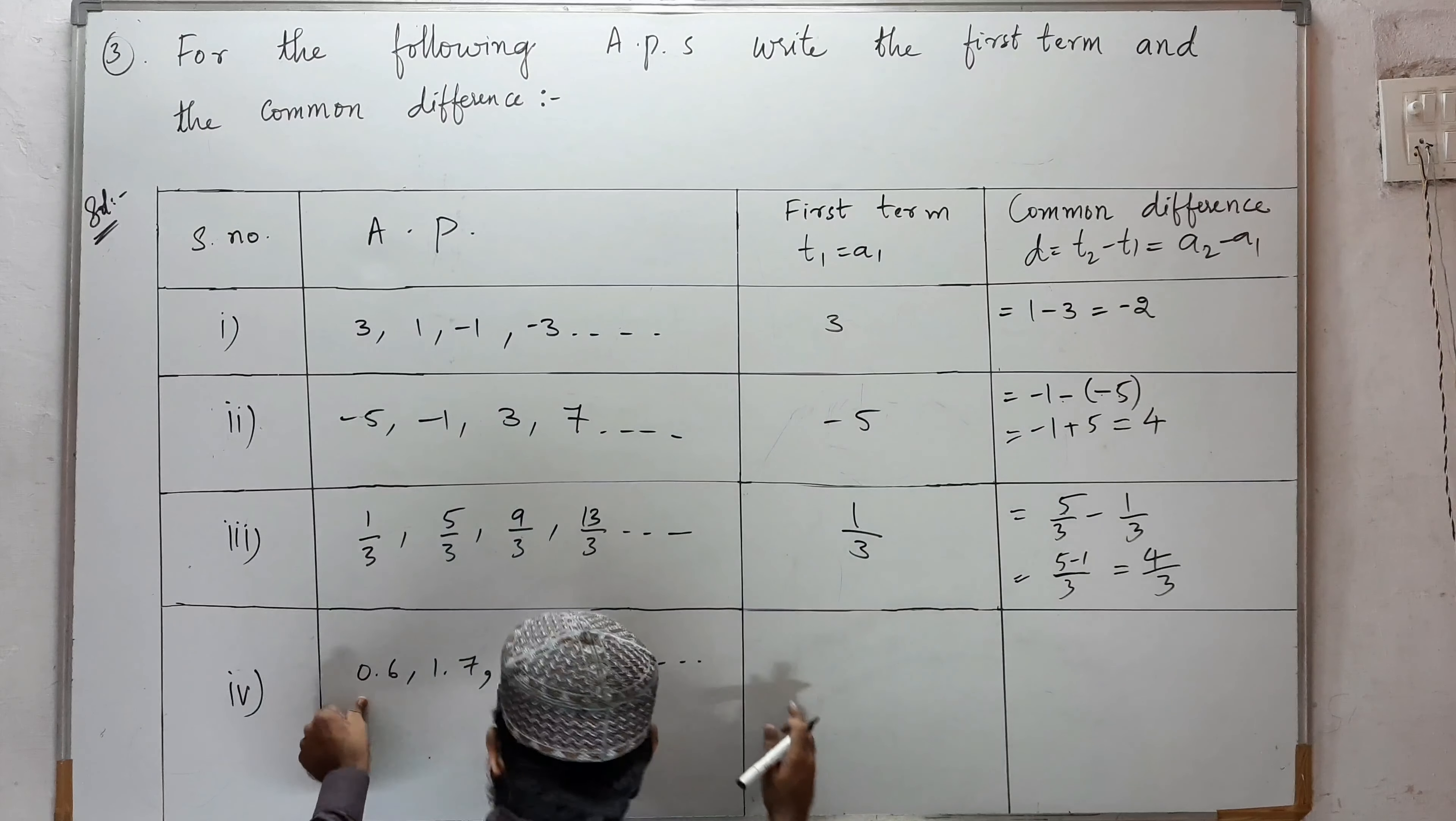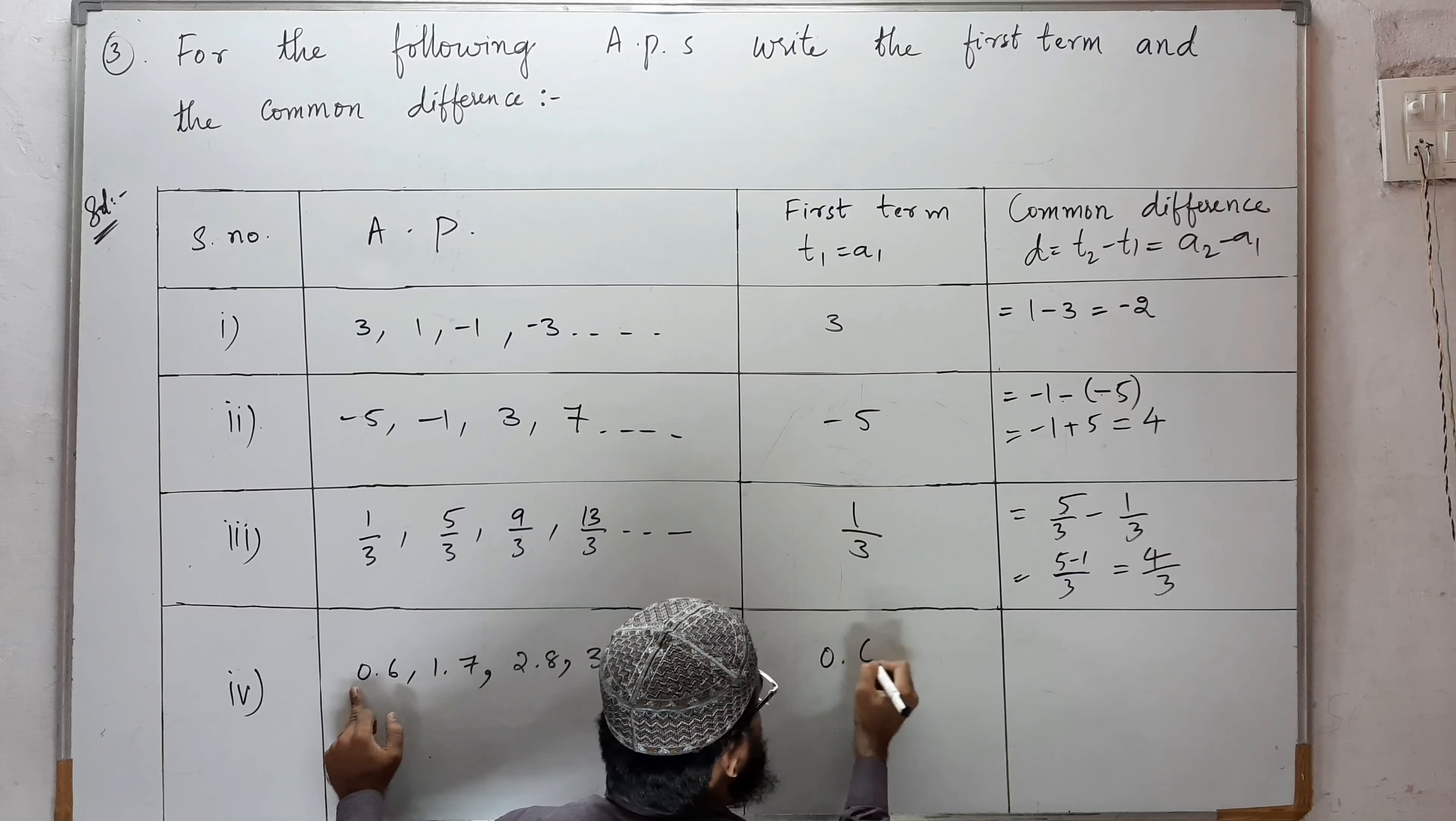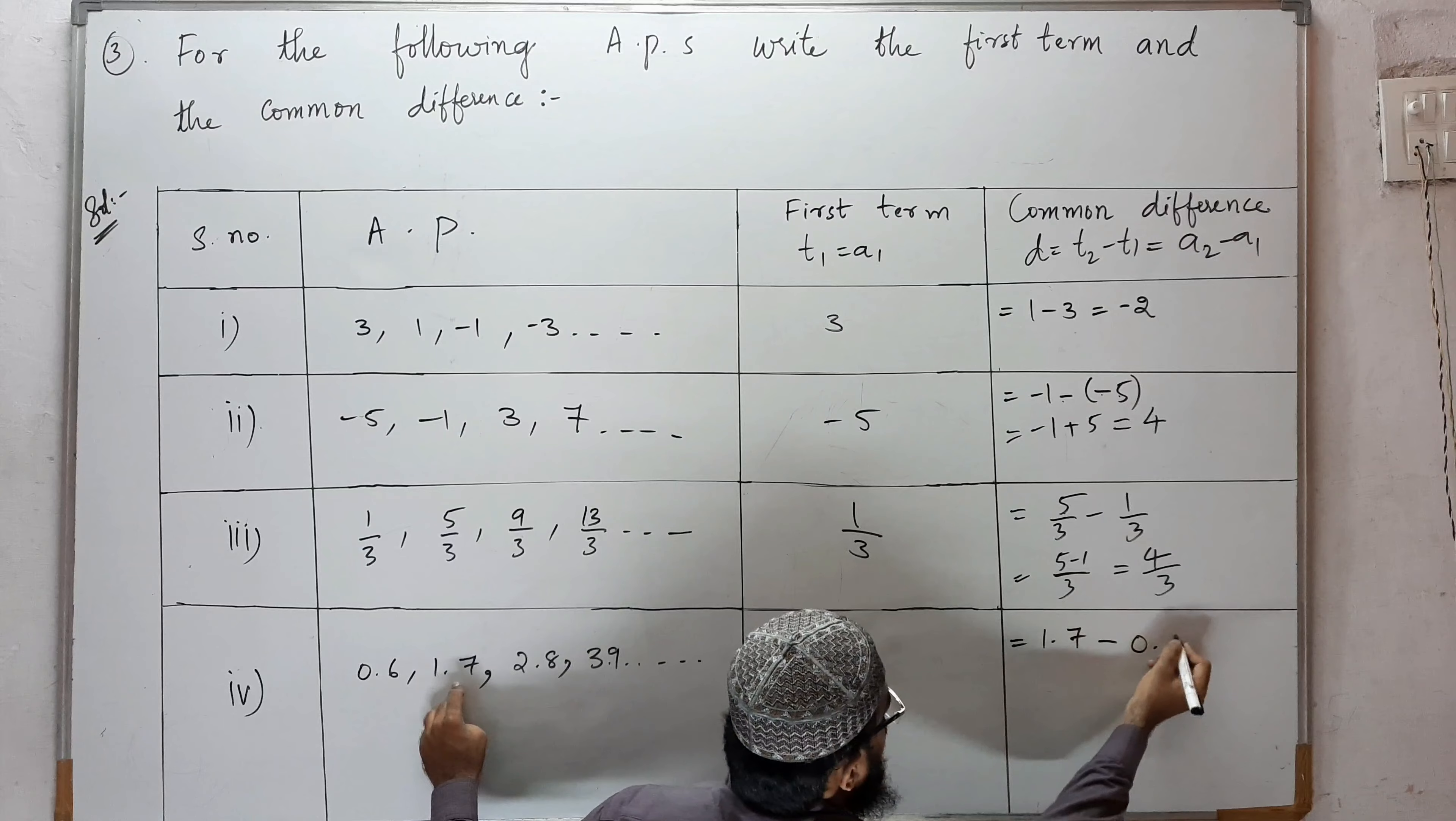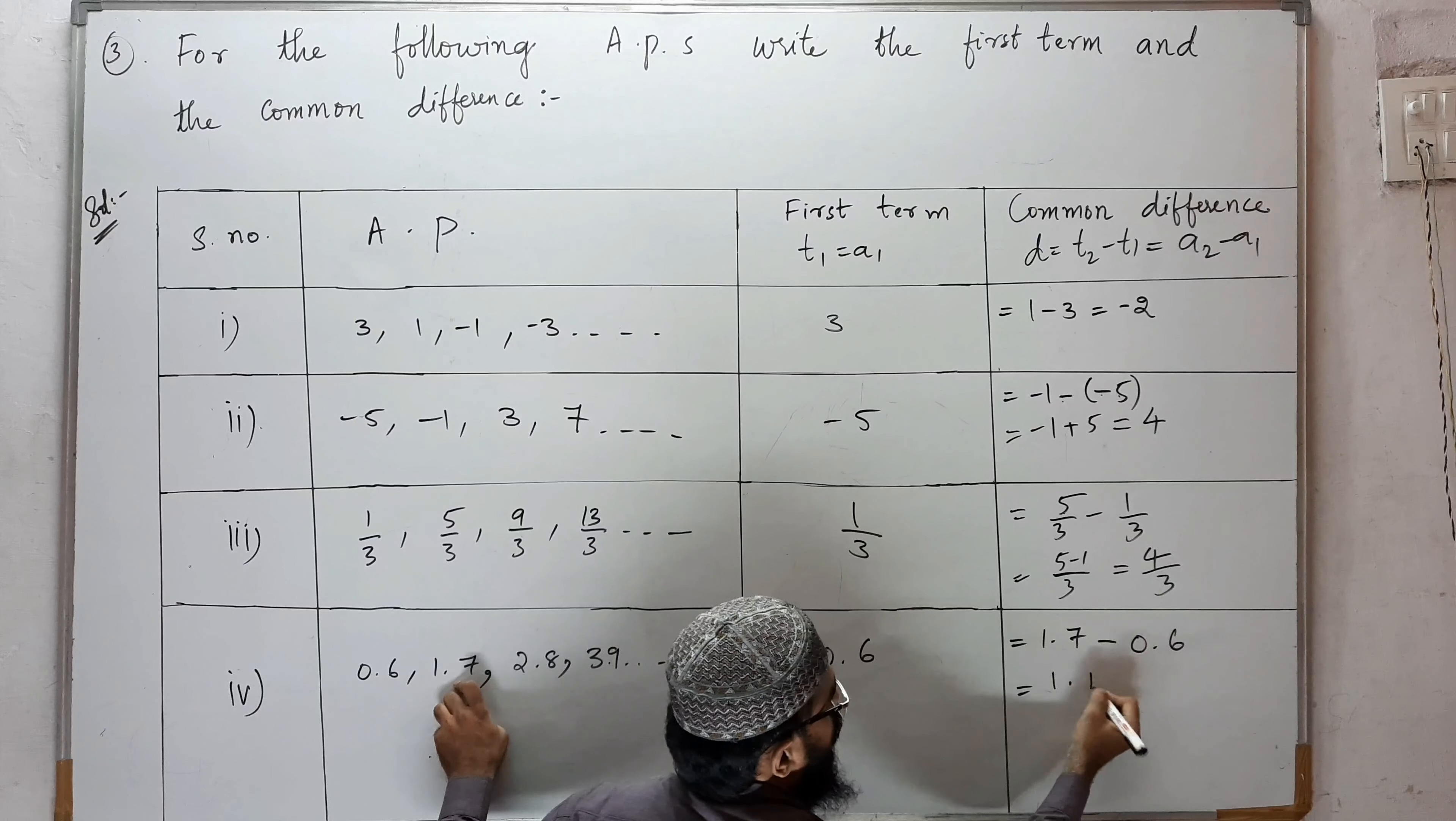Next AP: 0.6, 1.7, 2.8, 3.9. The first term is 0.6. The common difference is 1.7 minus 0.6. 1 minus 0 is 1, 7 minus 6 is 1, so the answer is 1.1.